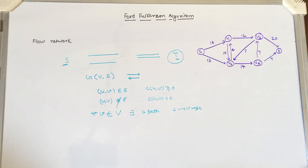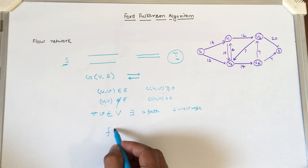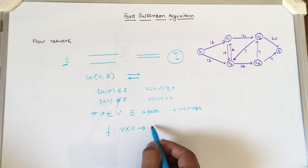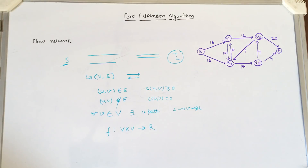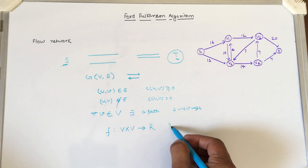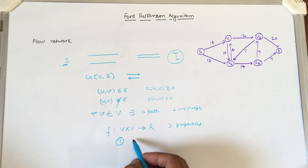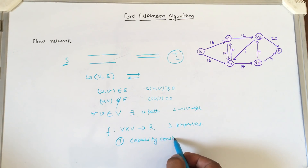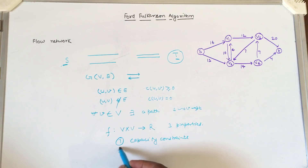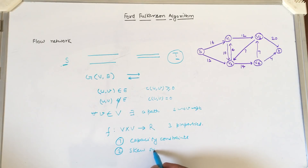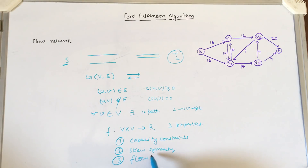Now, to define the flow in a flow network: a flow is a real-valued function that satisfies three properties — first, capacity constraint; second, skew symmetry; and third, flow conservation.